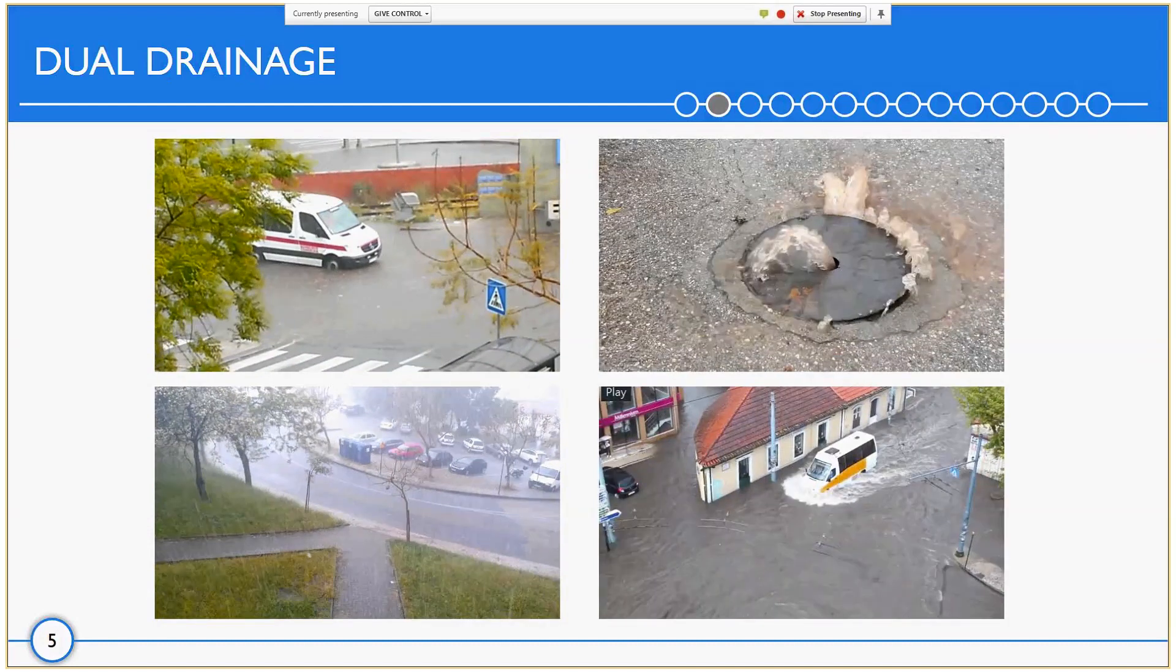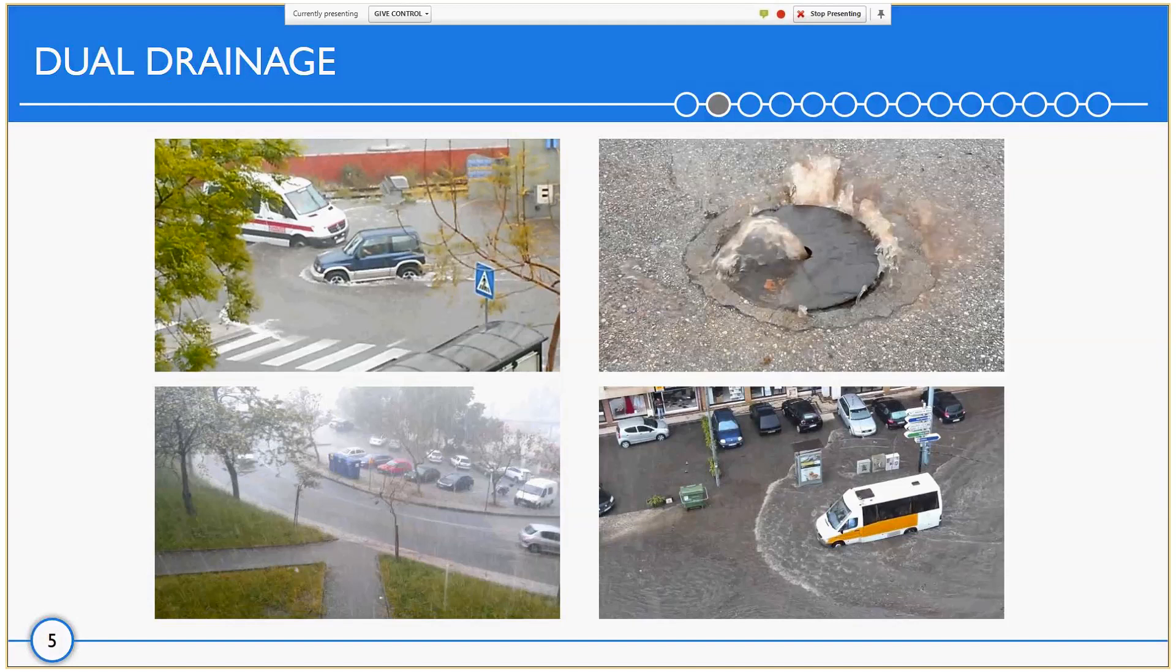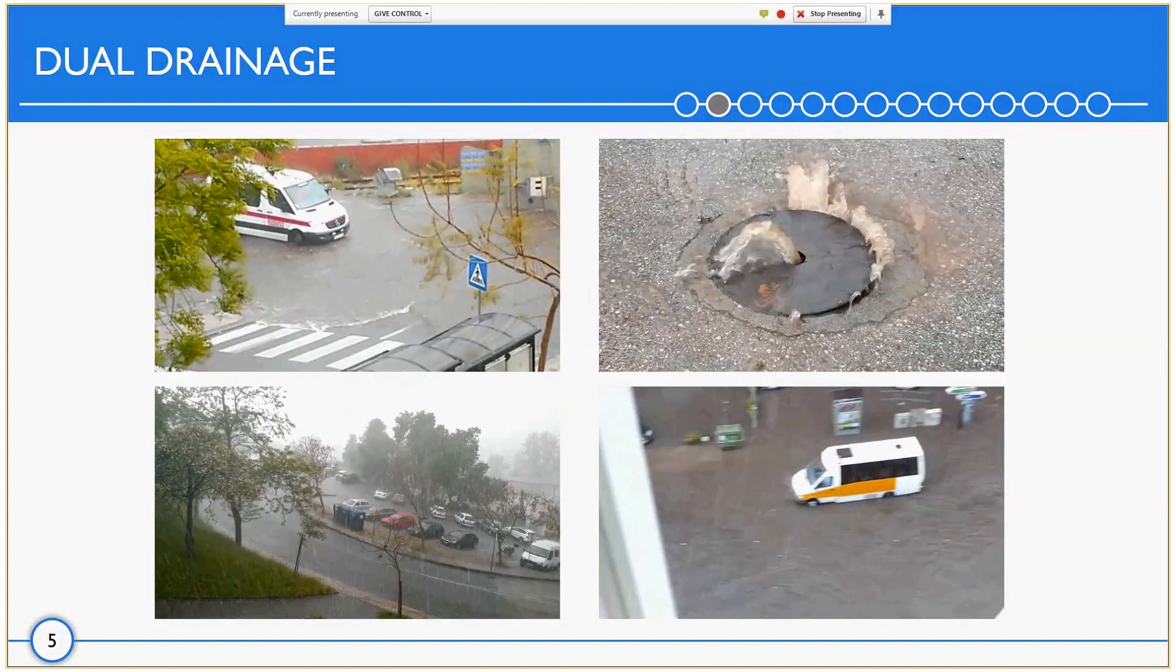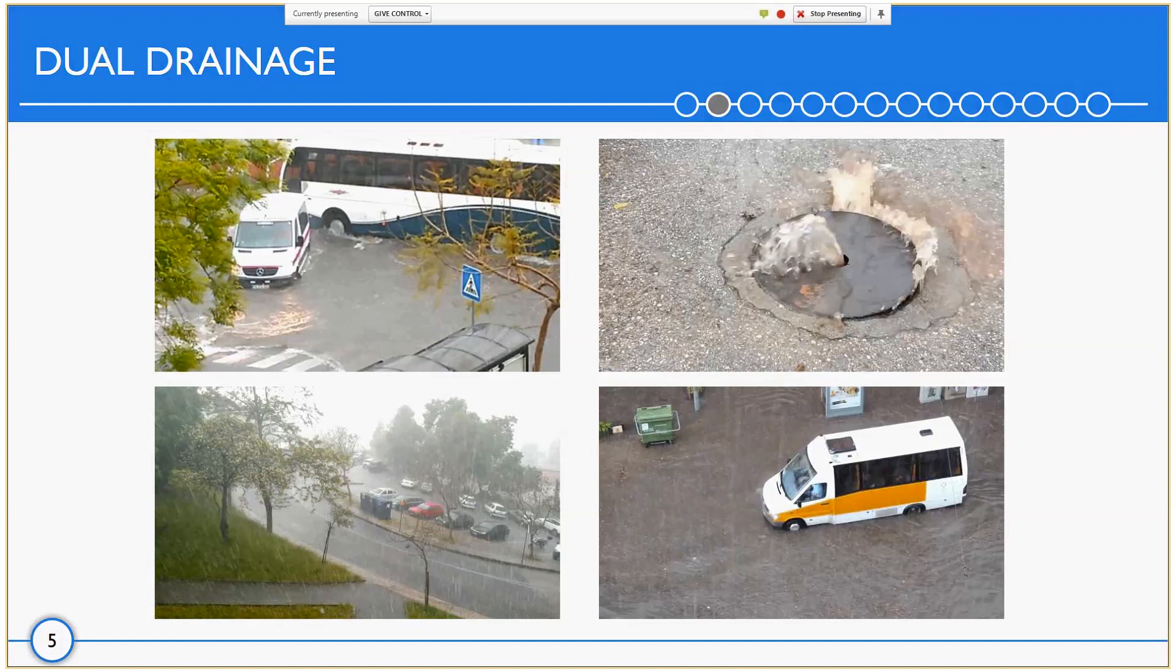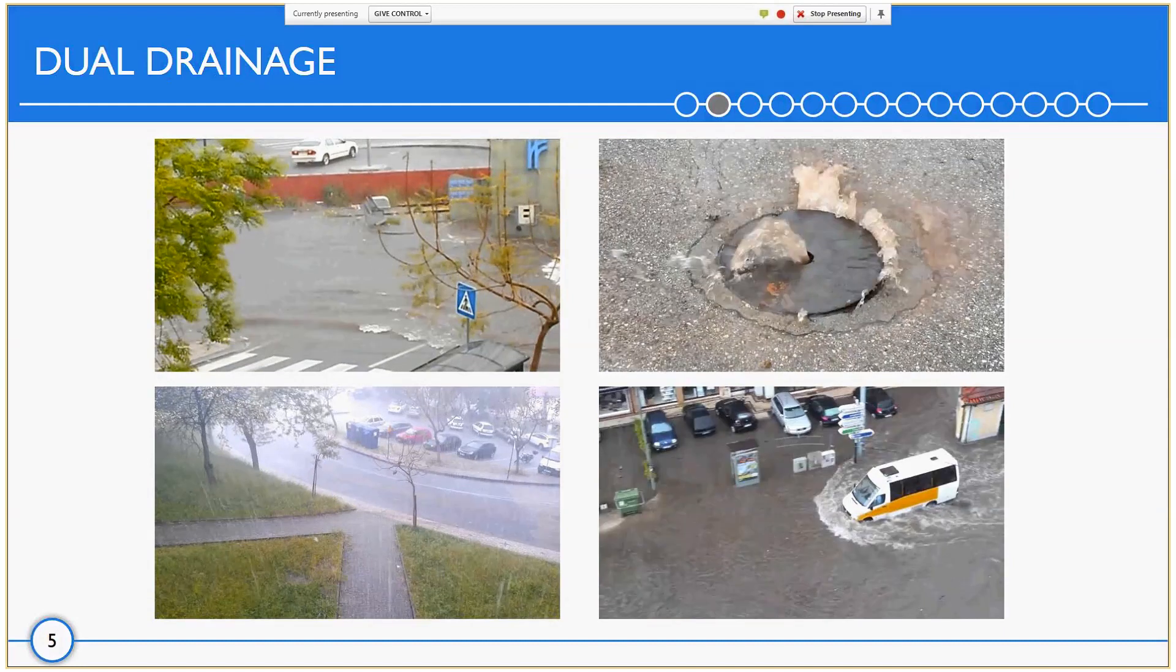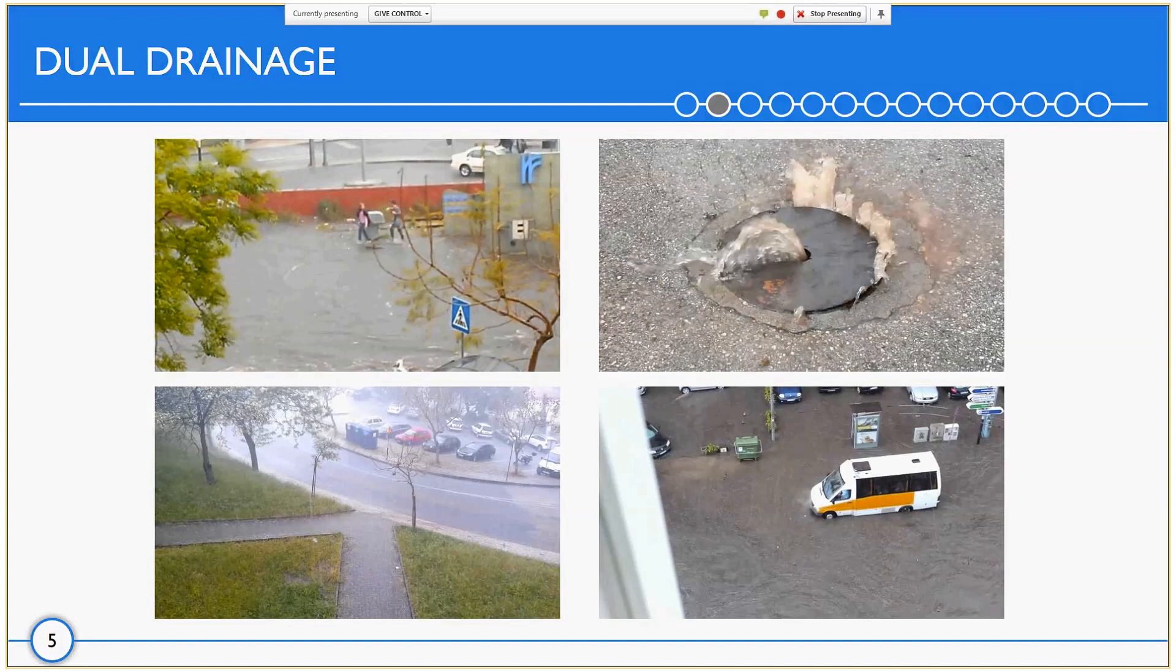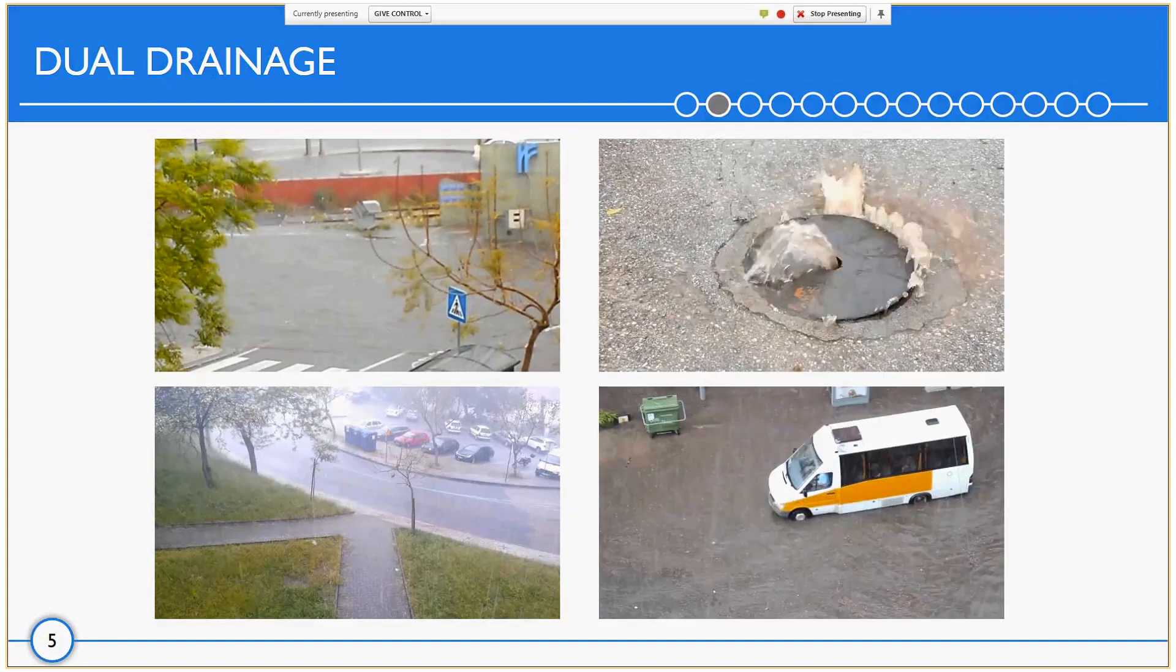These are just some videos to show a small example of what can happen during a high intensity short event. On the lower left corner, you have an idea of how intense the precipitation was. Top left, there is a small flooded area that had some disruption. On the top right, there is a manhole that's situated, if you see in the video on the left, above the brick wall. And on the lower right corner, another flooded area with some vehicles being stopped because of that.